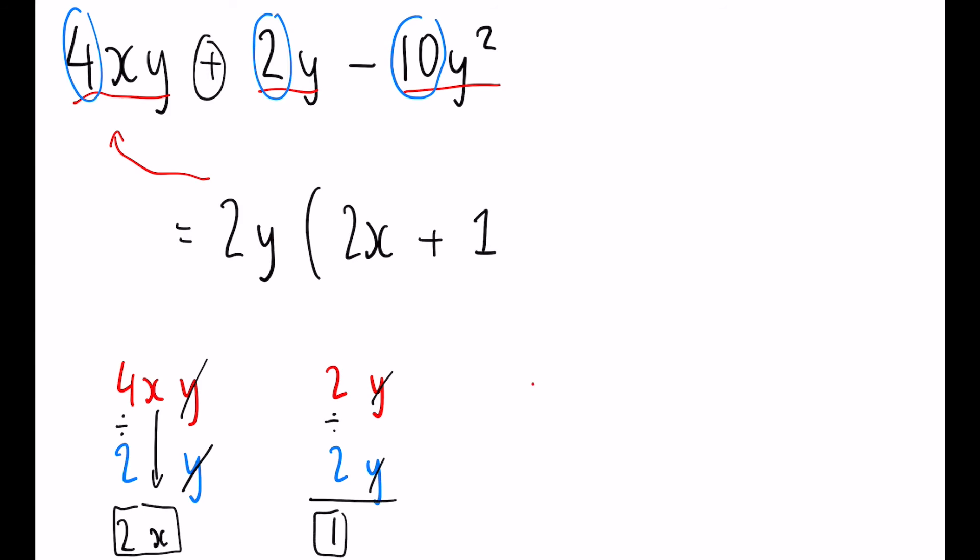Finally, we've got a negative 10y squared. And we want to divide that by a 2y. 10 divided by 2 is 5. y squared take away y. Just like before, we can write that instead as yy. One of these y's will cancel out. And this last y will carry down to there. And that is a negative. That's really important to notice. So we have minus 5y as the last one.